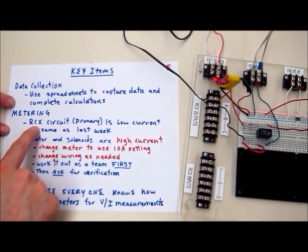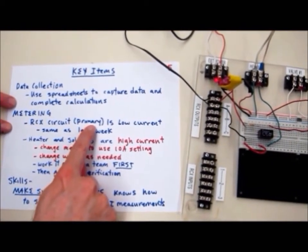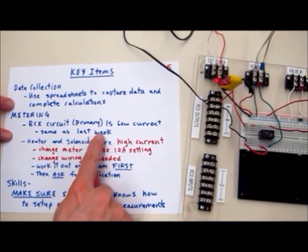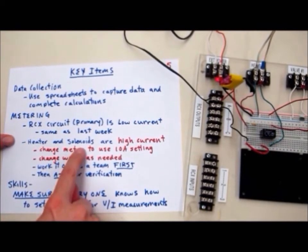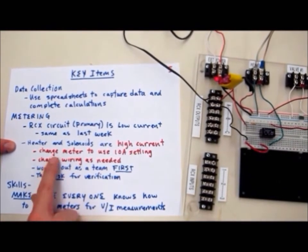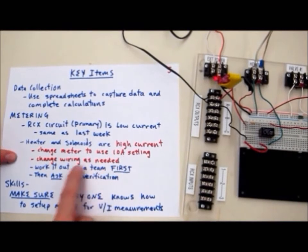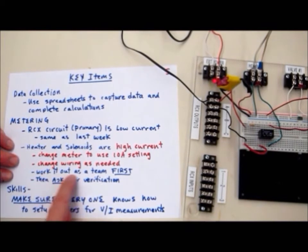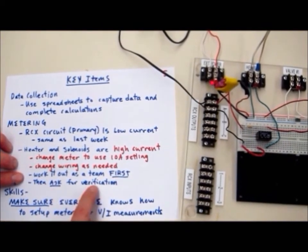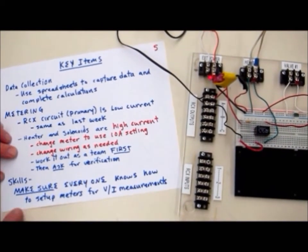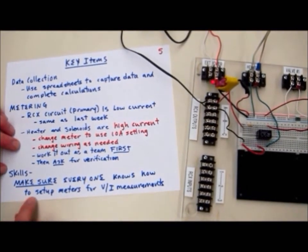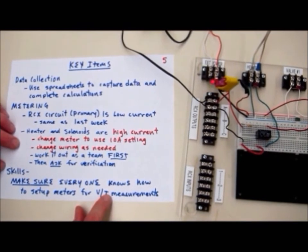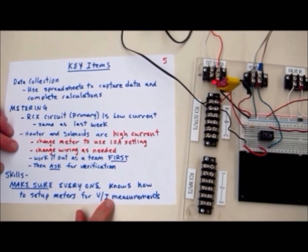In the metering, the RCX, or the primary circuit that we did first, is a low current. It's the same meter connections as last week. The heater and solenoid valves are high current. You need to change the meter to use the 10-amp setting. Change the wiring as needed. We can show you that in class. Work it out as a team first and then ask us for verification. Lastly, make sure everyone knows how to set up the meters for voltage and current measurements. This is a skill we want you to know before you leave this semester. Practice it now and make sure everyone understands.